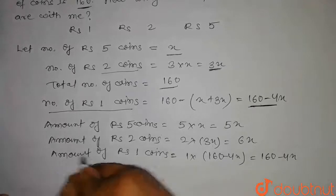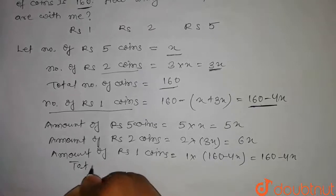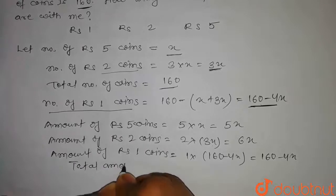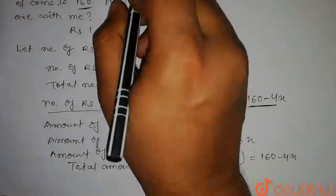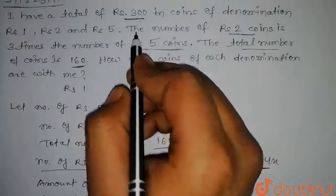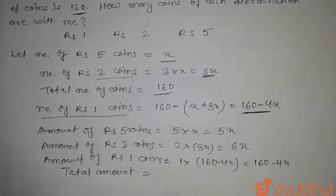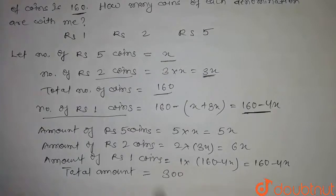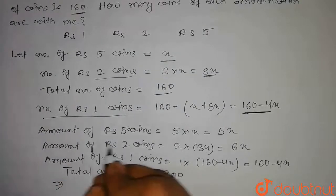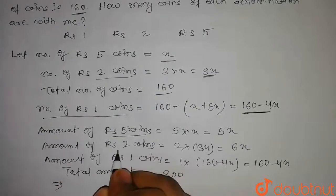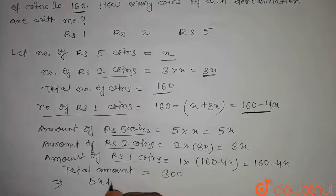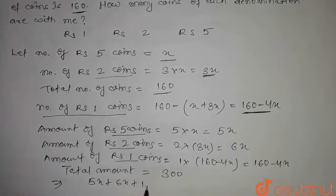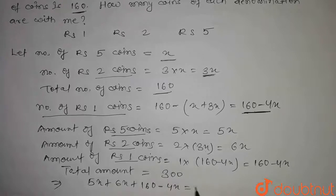The total amount is equal to Rs.300. So this total amount — the sum of Rs.5 coins, Rs.2 coins and Rs.1 coins — gives us the equation: 5x plus 6x plus (160 minus 4x) equals 300.